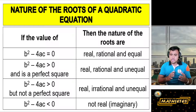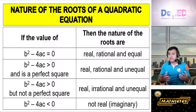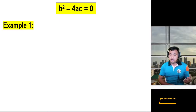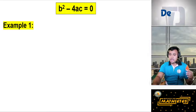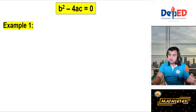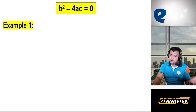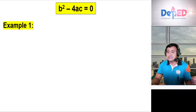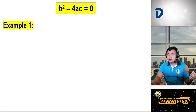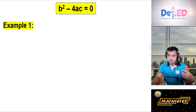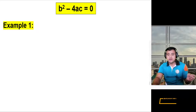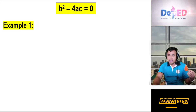Have you noticed that the expression b squared minus 4ac comes from the quadratic formula? It is inside the radical sign of the quadratic formula: x = (−b ± √(b²−4ac)) / 2a. What matters is whether the discriminant is zero, a positive perfect square, a positive non-perfect square, or a negative number.